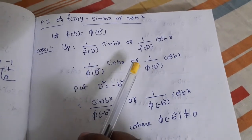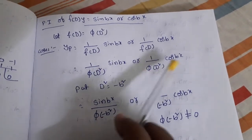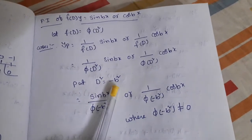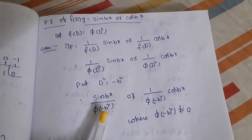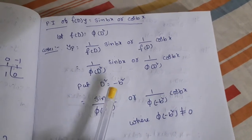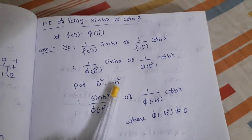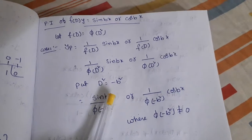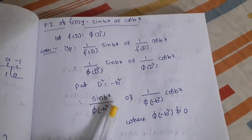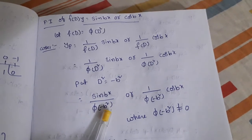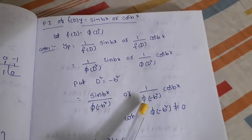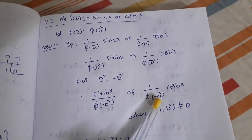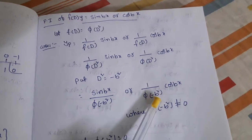So we have 1/φ(D²) · sin(bx) or 1/φ(D²) · cos(bx). In place of D², substitute minus b². The coefficient of x here is b, so in place of D² only, we substitute minus b². We leave D as it is — no need to substitute any value in place of D. For cos(bx) also, in place of D² we substitute minus b².